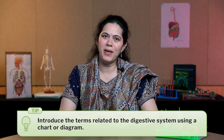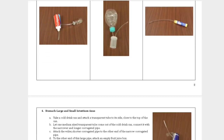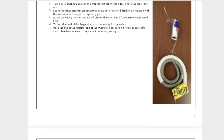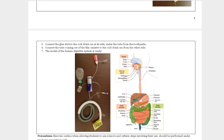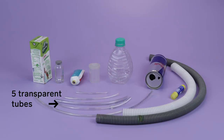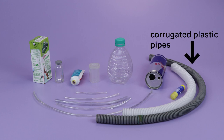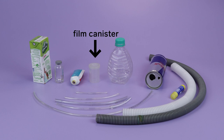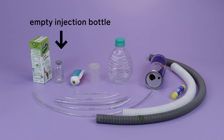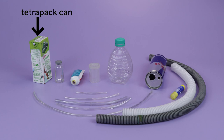And then the fun part begins — making a model of the digestive system. For this, you would need: a printout of the instruction sheet for each group with a sketch of the digestive system, around five transparent tubes, an empty toothpaste tube, two corrugated plastic pipes — a long and narrow one and a wide and short one — a cold drink can, a film canister or any container of a similar size and shape, a small size plastic water bottle, an empty injection bottle, a glue stick, and a small empty tetra pack carton.